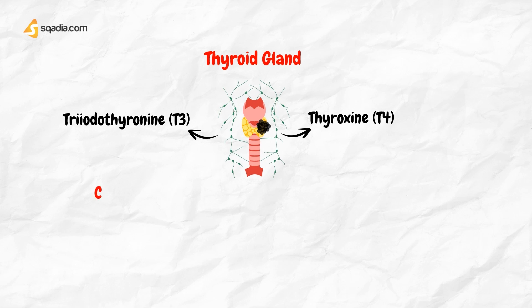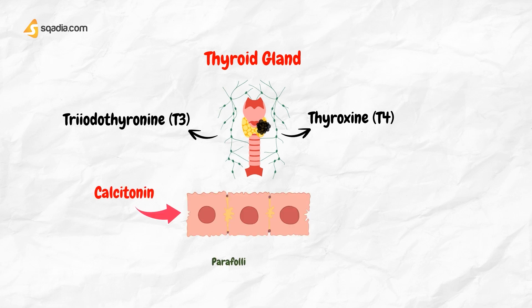Another hormone, calcitonin, is produced by the parafollicular cells and is involved in the regulation of calcium metabolism.